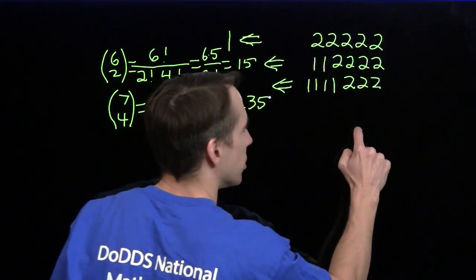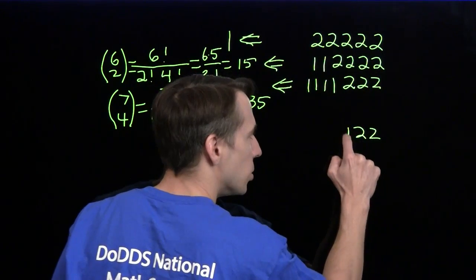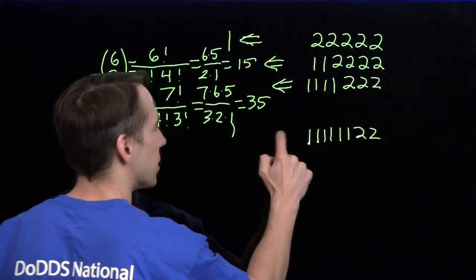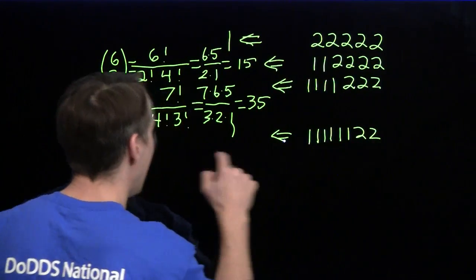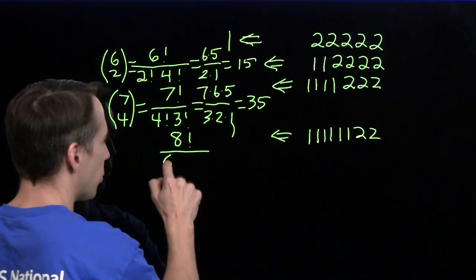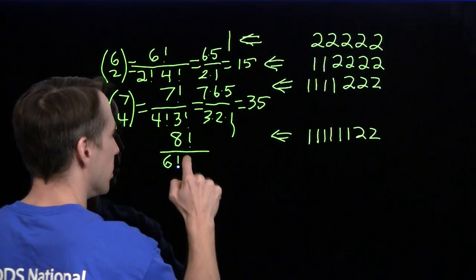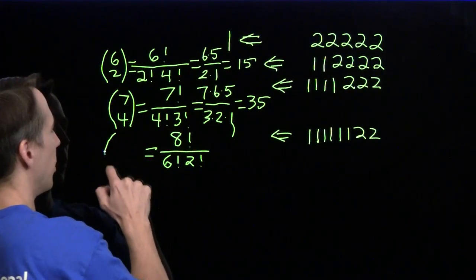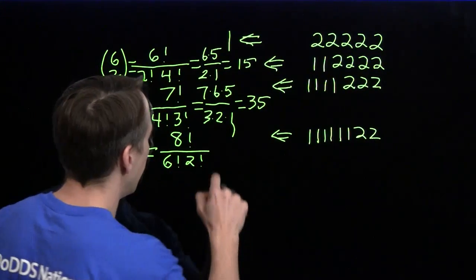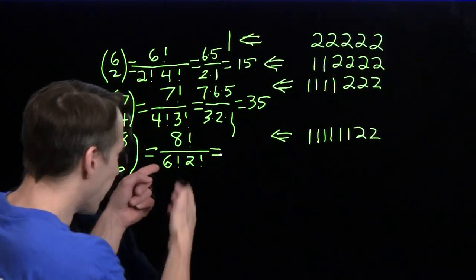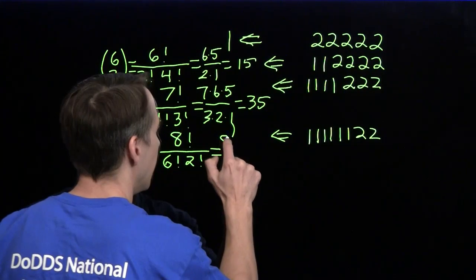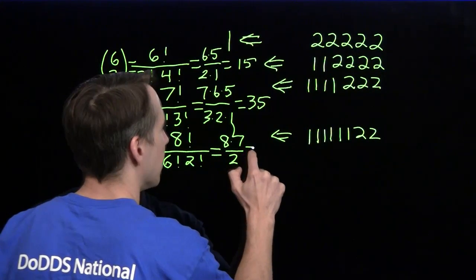Three cases down, just a few more to go. We have two two-pill days and six one-pill days. This time we have eight factorial divided by six factorial for the ones and two factorial for the twos — we might write that as eight choose six. The six factorial cancels off with the last six terms of eight factorial, leaving eight times seven divided by two. That gives us 28.